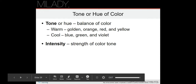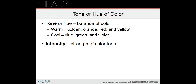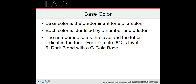We're starting part two of cosmetology hair color, Chapter 21. We're picking up where we left off: tone or hue, the balance of color. We have warm, which includes golden, orange, red, and yellow, and cool, which is blue, green, or violet. The intensity is the strength of the color tone. The base color is the predominant tone of a color — it could have a blue base, green base, red base, or violet base.